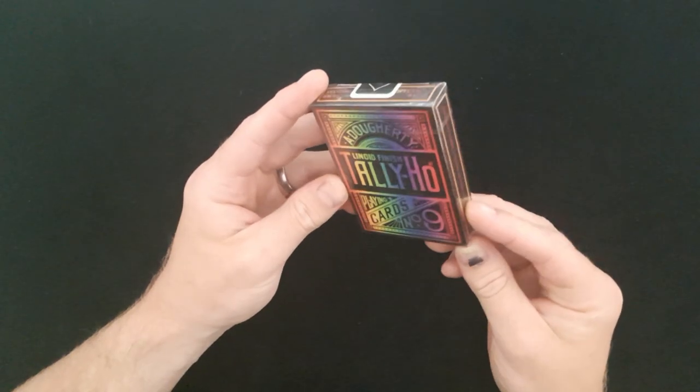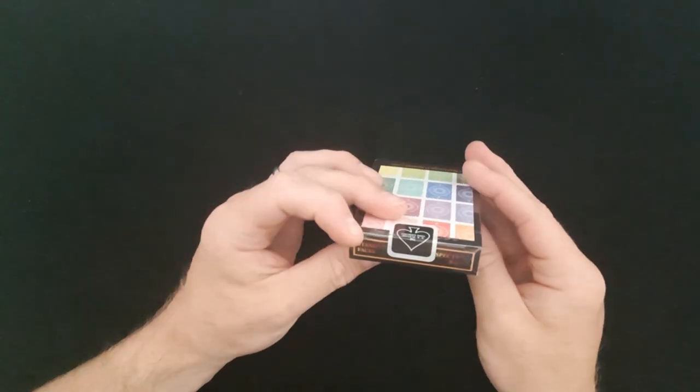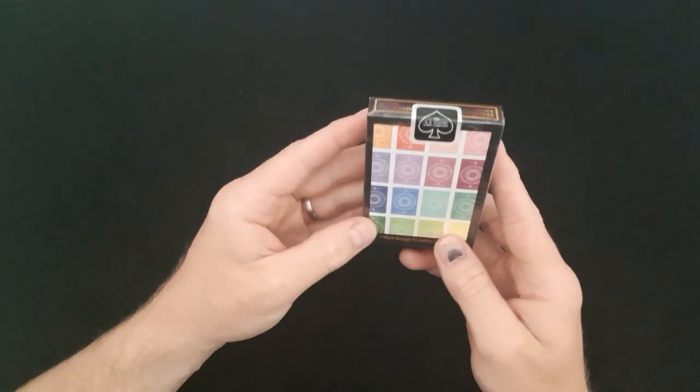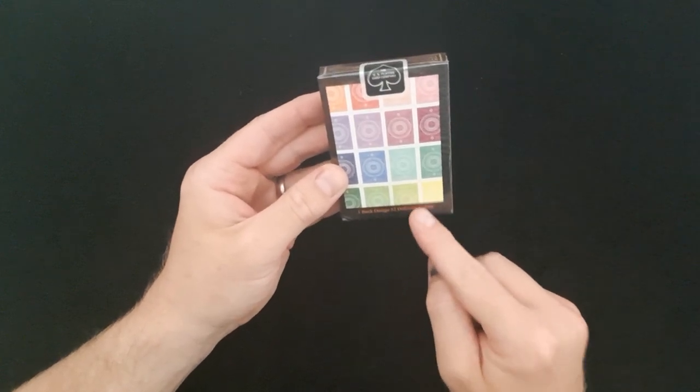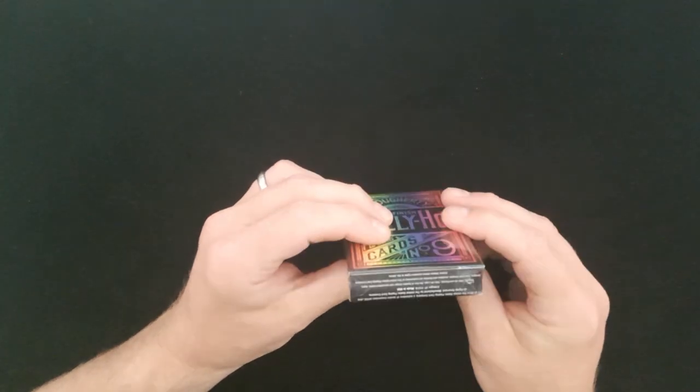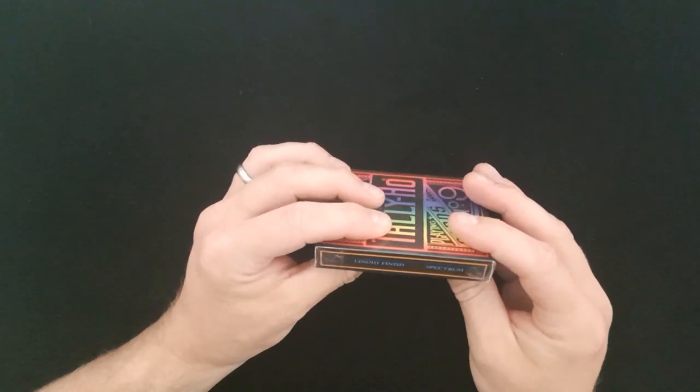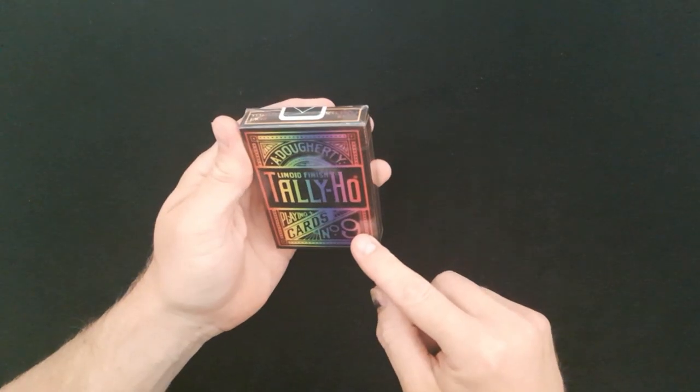Okay so here you have it, the Tally Ho Playing Cards. This is a 2014 run, one back design with 52 different colors. That's pretty cool. You have on the side, United States Playing Card Company, Linoid Finish, the Spectrum Playing Card. They're number nine.